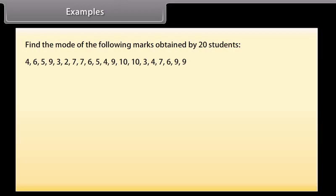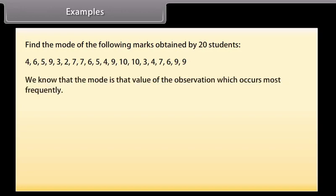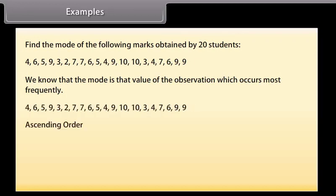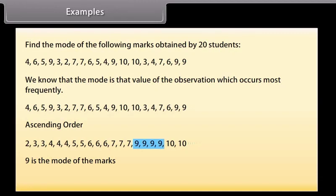Find the mode of the following marks out of 10 obtained by 20 students. We know that the mode is that value of the observation which occurs most frequently. Let's arrange these marks in ascending order. We can see that 9 is occurring more frequently. So we can say that 9 is the mode of the marks.